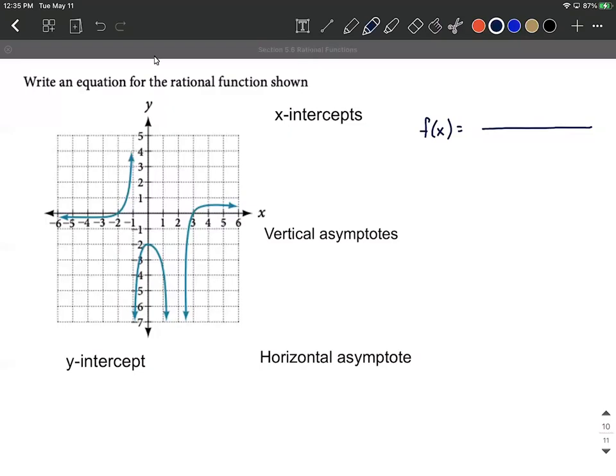We're given a graph of a rational function, as you can see on the left-hand side. Our goal is to put it all together and come up with whatever the function itself is that would produce this graph. We're going to collect some information here: x-intercepts, vertical asymptotes, horizontal asymptotes, and the y-intercept, and put that all together to get the function itself.